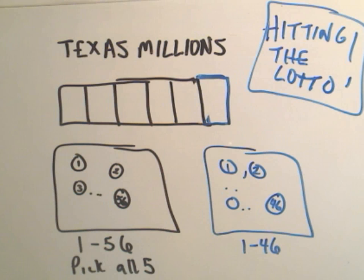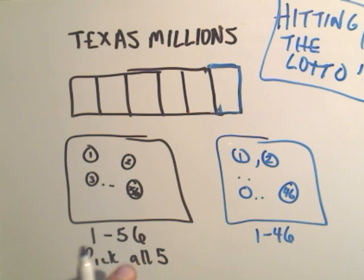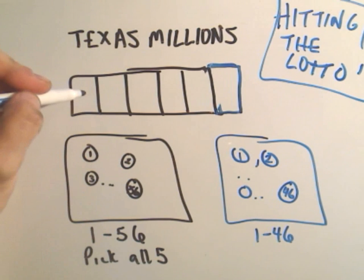And the way that you win the Texas Millions Lottery is there's basically a big container of balls that are numbered 1 through 56. You pick five, so five balls come out.